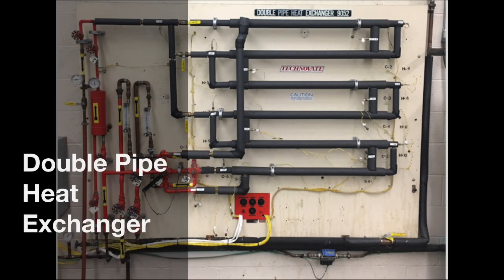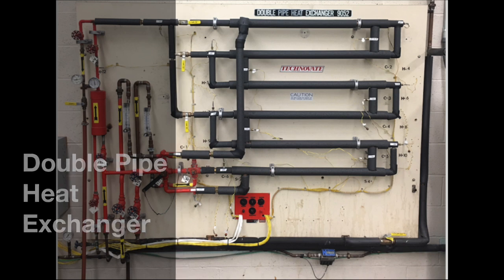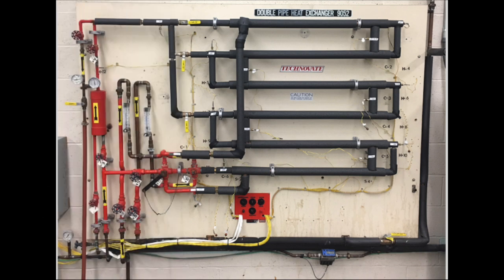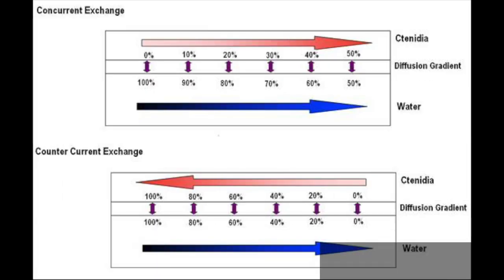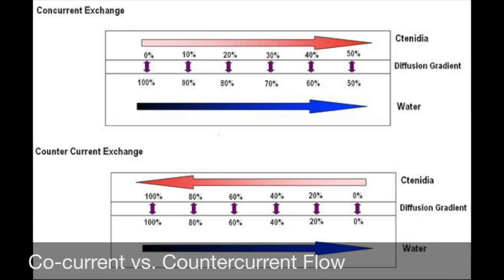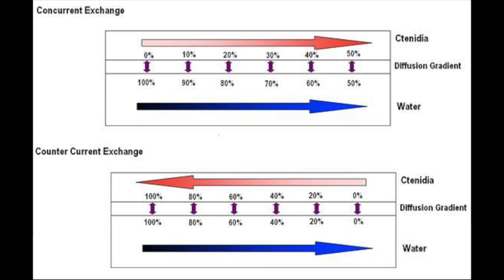The objective of the double pipe heat exchanger experiment is to determine if counter current flow through a heat exchanger is more effective than co-current flow. Counter current flow is the process in which the cooling fluid is flowing in the opposite direction of the warming fluid. Co-current flow is the process in which the cooling and warming fluids flow in the same direction.